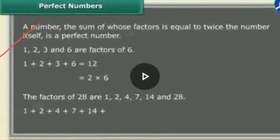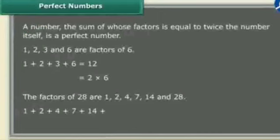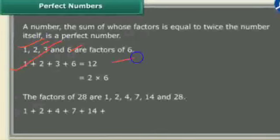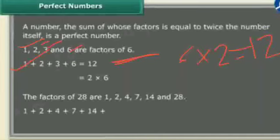Let us find the factors of 6. The factors of 6 are 1, 2, 3 and 6. Now, twice the number means 6 into 2 is equal to 12. When we add all the factors: 1 plus 2 plus 3 plus 6, the sum is 12. So the sum of the factors equals 12, which is twice of 6.